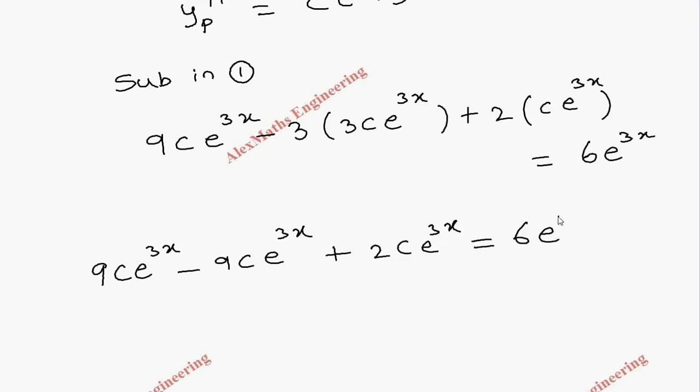So here we can cancel 9ce^3x minus 9ce^3x. We can cancel e^3x from both sides, then the remaining 2c equals 6. From this the value of c is 3.